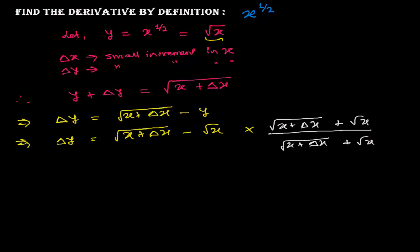By doing so, this forms the identity a squared minus b squared. If this is a and this is b, it will form a squared minus b squared, which is a plus b times a minus b.